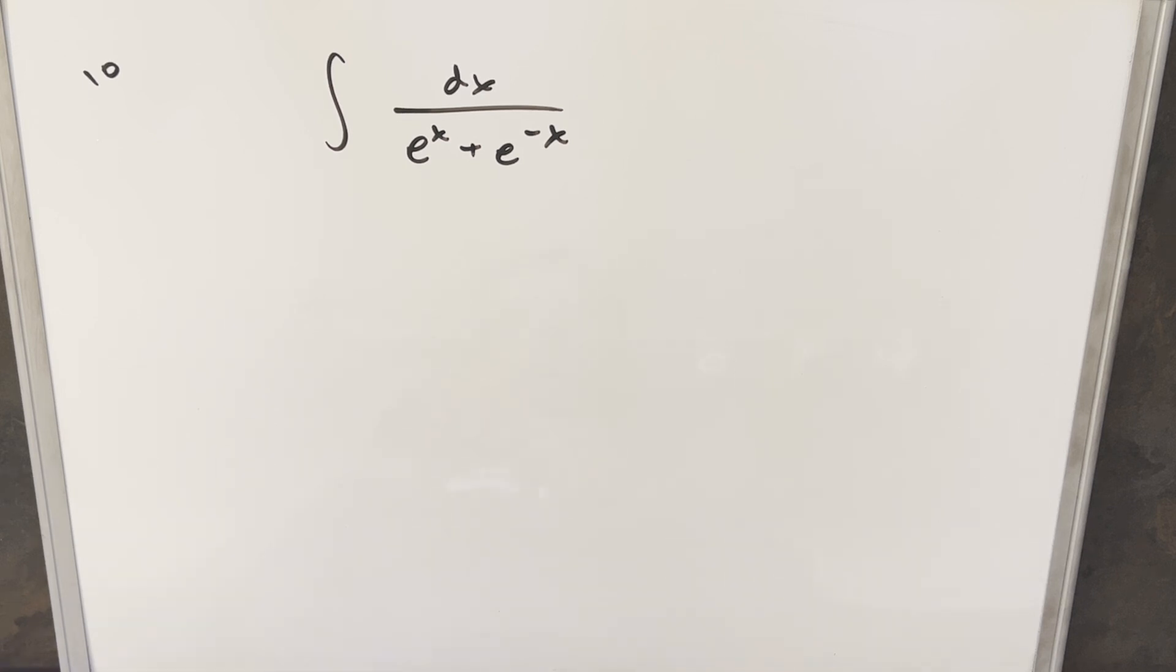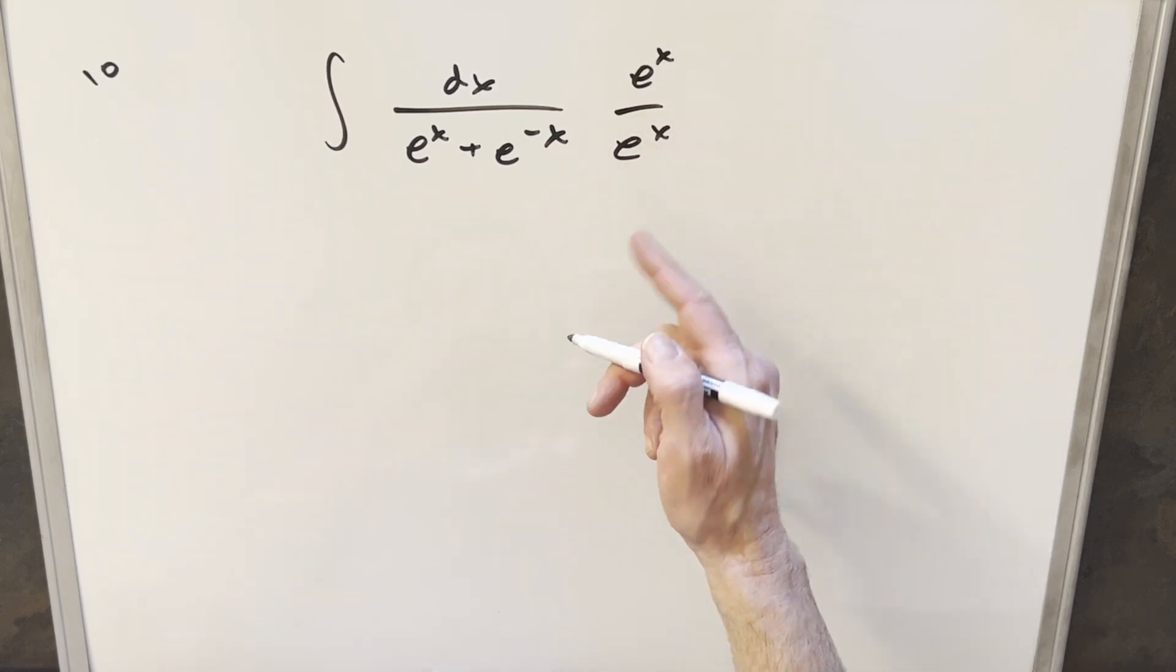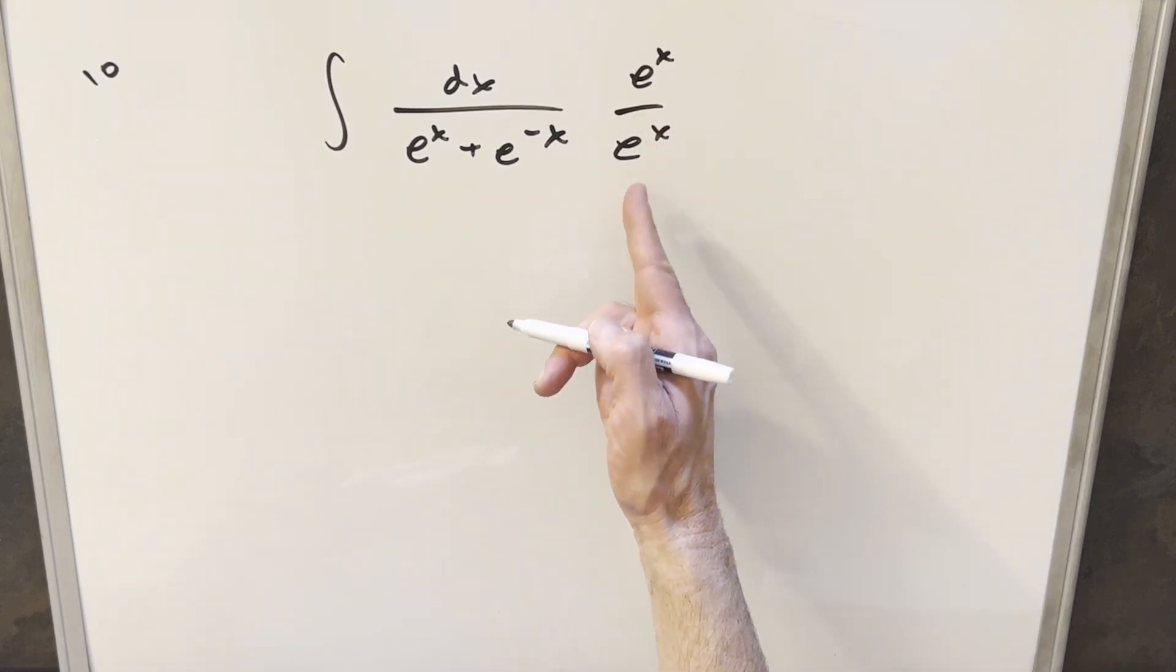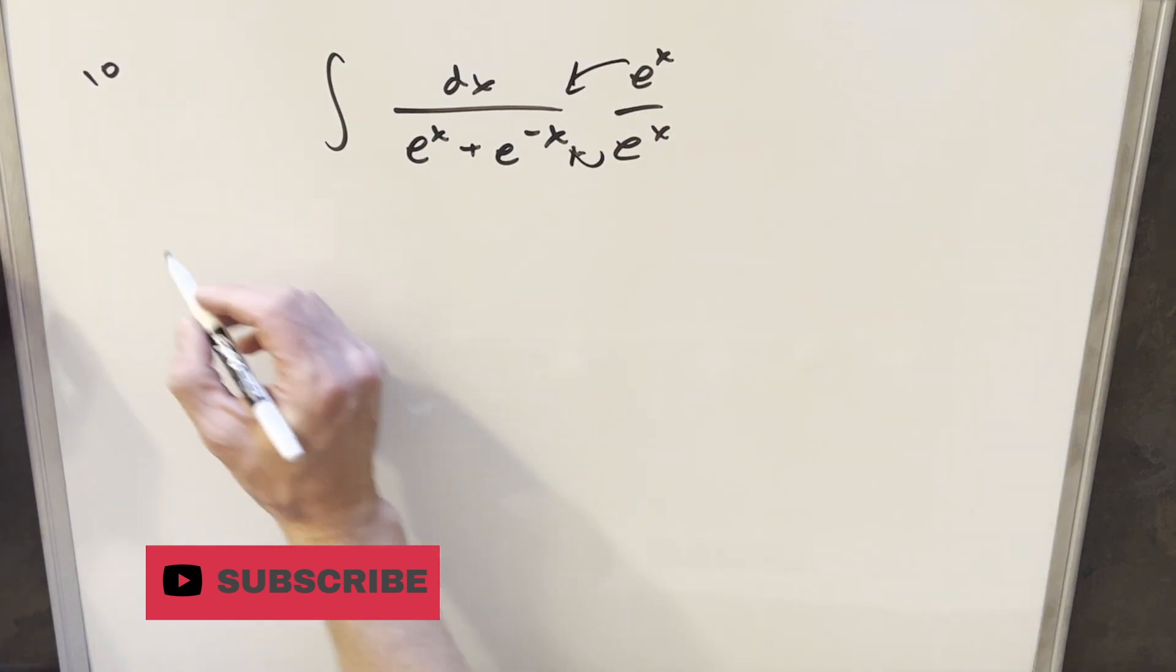There's probably a few ways we can do this, but what I'd like to do here in this case is just multiply through. We can multiply this by 1 if we multiply by e to the x over e to the x. And so let's just distribute this in and rewrite it.